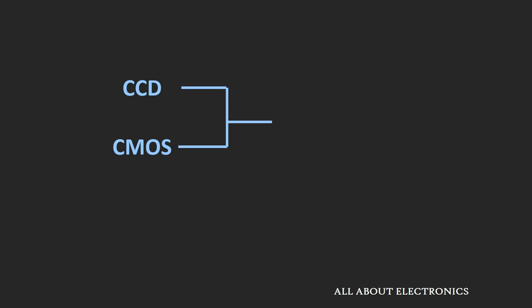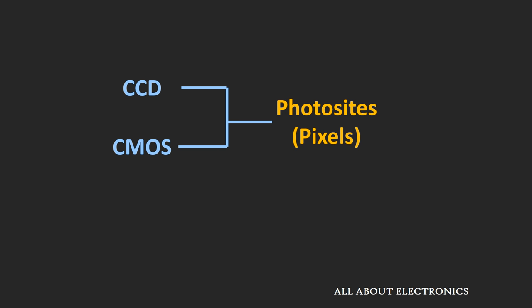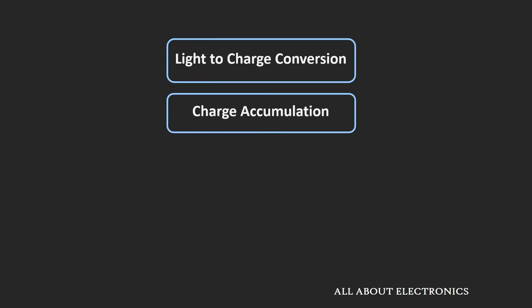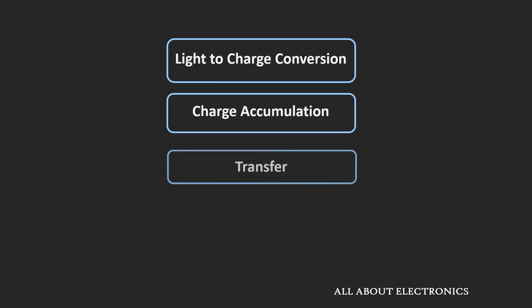Both types of sensors consist of millions of photosites or pixels. These photosites convert the incoming light into charge or electrons. Although these two sensors are quite different, they are common in many aspects. These are the steps followed in both sensors: first, the sensor converts the incoming light into charge. The photosites or pixels are exposed to the light for a certain amount of time, and during this time the charge gets collected in these pixels. Once the charge is collected, it is transferred for further processing.